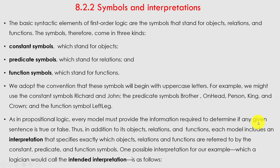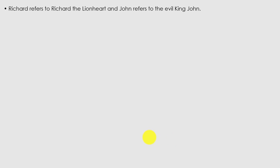As in propositional logic, every model must provide the information required to determine if any given sentence is true or false. Thus in addition to its objects, relations, and functions, each model includes an interpretation that specifies exactly which objects, relations, and functions are referred to by the constant, predicate, and function symbols. One possible interpretation — what a logician would call the intended interpretation — is: Richard refers to Richard the Lionheart, and John refers to the evil King John.